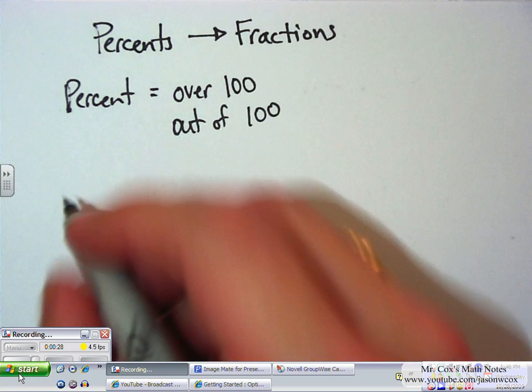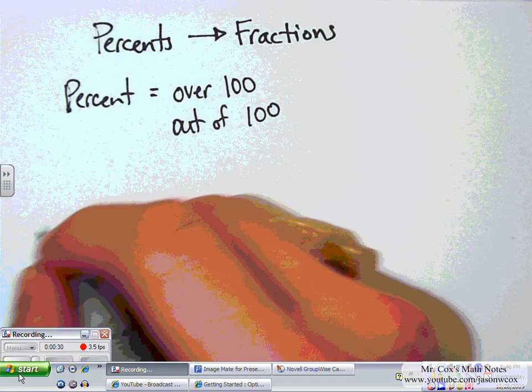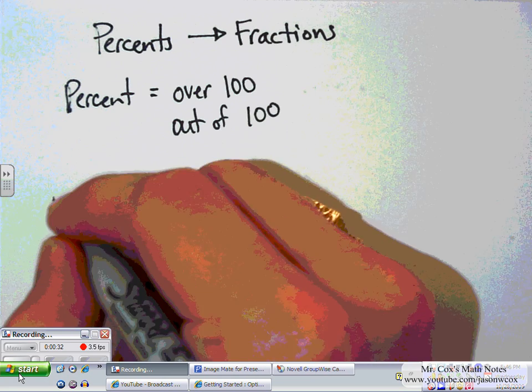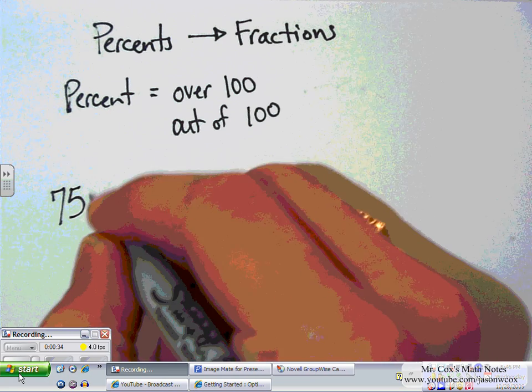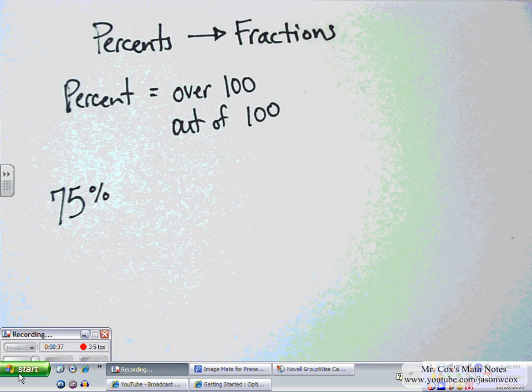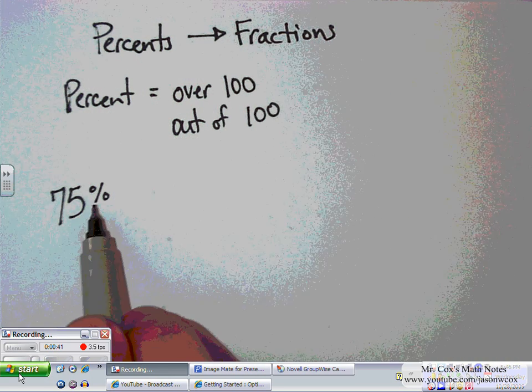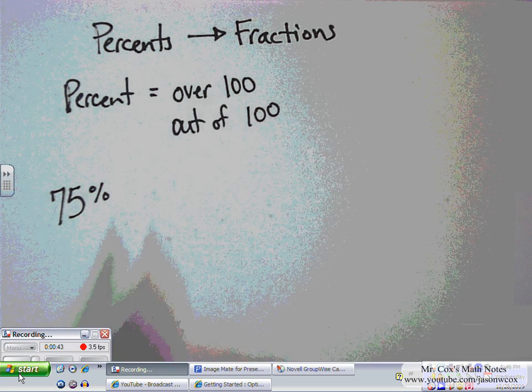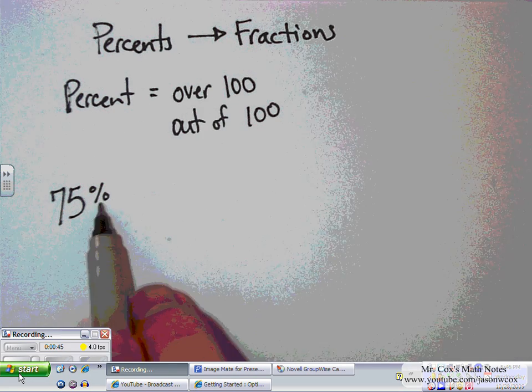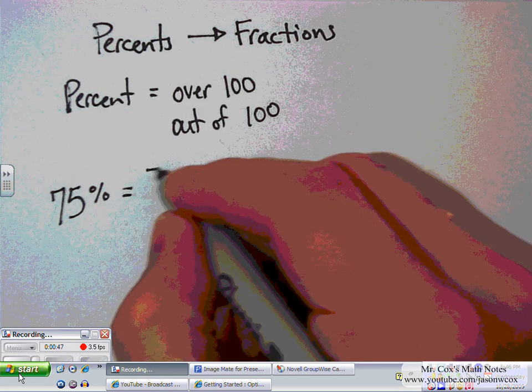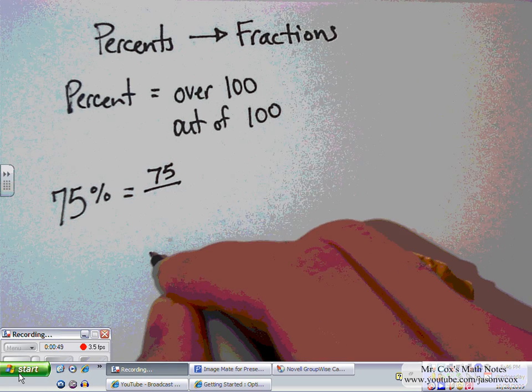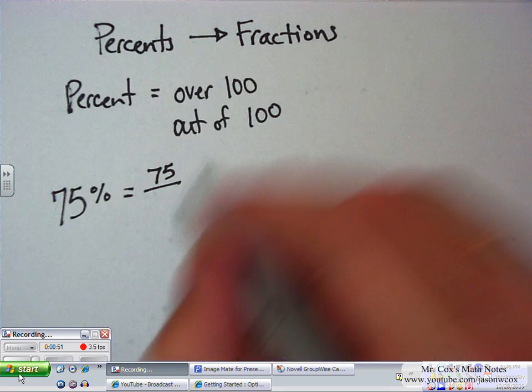If percent means over 100, and I've got a percent, let's start off with a fairly simple one, like 75%. You should have seen that before. So, 75%. Well, if percent means over 100, then shouldn't 75% mean 75 over 100?